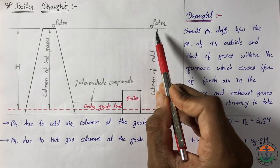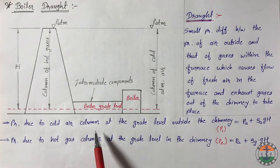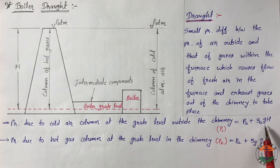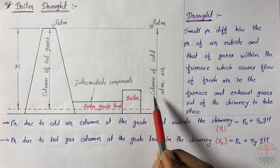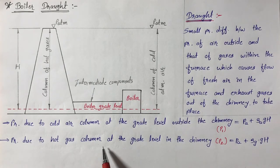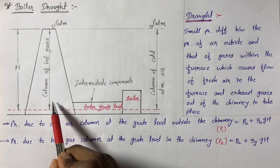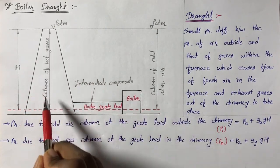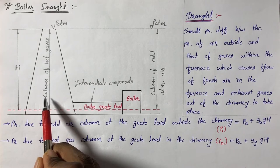PA is the atmospheric air pressure at the top of the chimney. Pressure due to cold air column at the grate level outside the chimney is equal to PA plus rho_A into G into H, where rho_A is density of air outside the chimney. Pressure due to hot gas column at the grate level inside the chimney, P2, is equal to PA plus rho_G into G into H, where rho_G is the average density of hot gases.